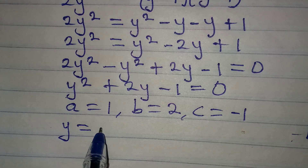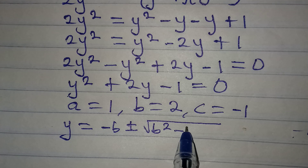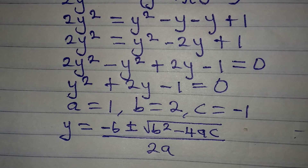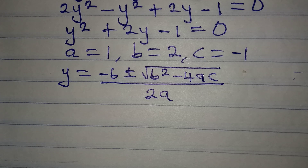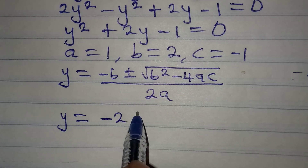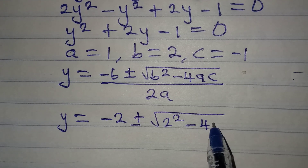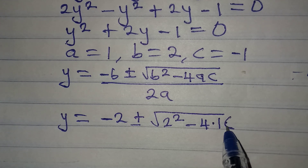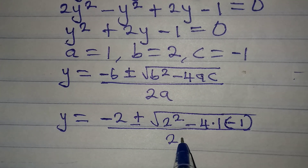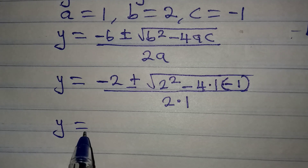The formula is: y = [-b ± √(b² - 4ac)] / 2a. Substituting: y = [-2 ± √(2² - 4 × 1 × (-1))] / (2 × 1).